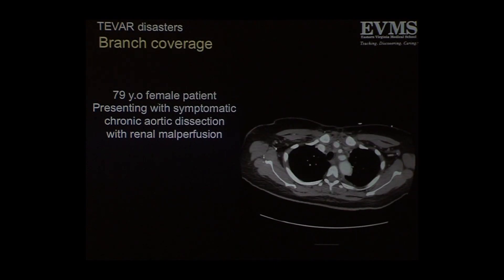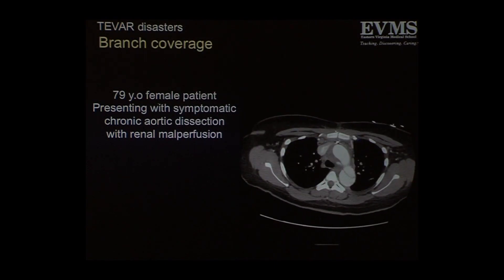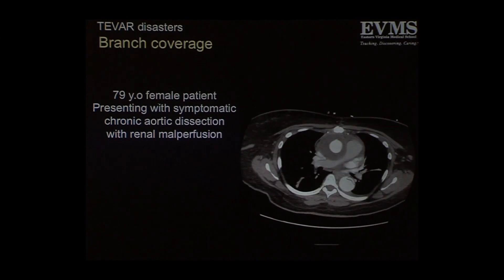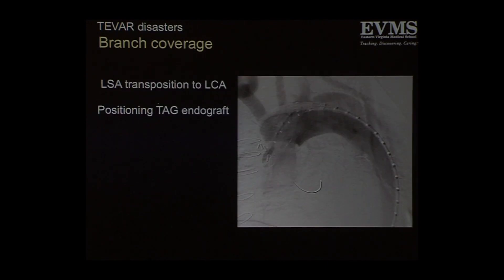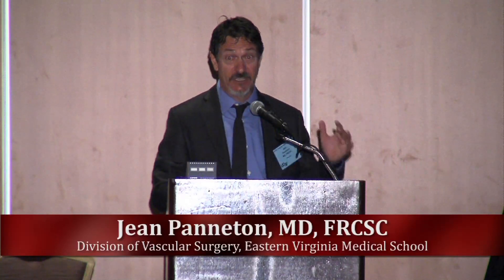Branch coverage. This is a 79-year-old female patient with a symptomatic chronic aortic dissection. She also had renal malperfusion and a previous ascending replacement. I did a left subclavian transposition to the carotid artery. You can see a TAG endograft being positioned here. In that patient, that Dacron endograft really caused a buckle of the aorta between the native aorta, the arch, and the ascending graft — and that's often the case. Another kind of patient that does that is the elephant trunk patient. That buckle can be very treacherous.